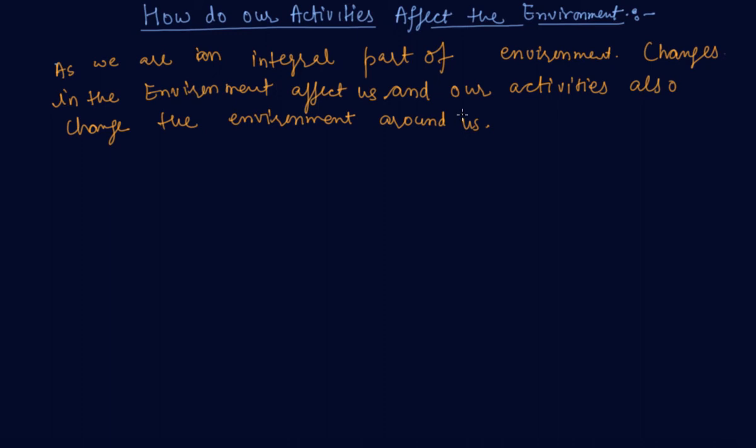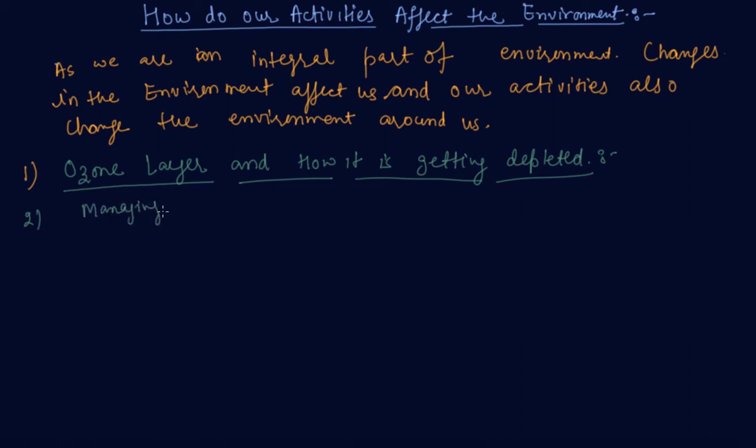So what are the different activities that are done by us that affect the environment? We will discuss two main activities: first is ozone layer and how it is getting depleted, and the second one is managing the garbage we produce. We will discuss the first one in this lecture and the second one in another lecture.